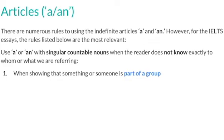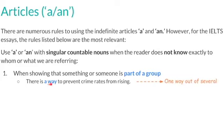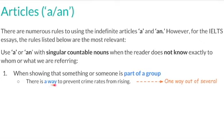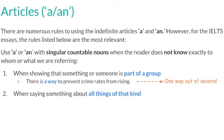We can use these articles to show that something or someone is part of a group. For example, we could say: 'There is a way to prevent crime rates from rising.' Here, we're talking about one way — just one way out of several, because there are many different ways. There isn't just one way; however, we're talking about one particular way.